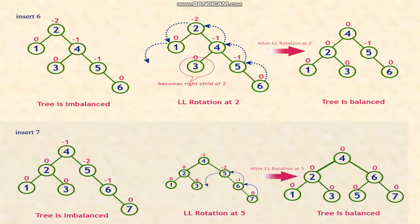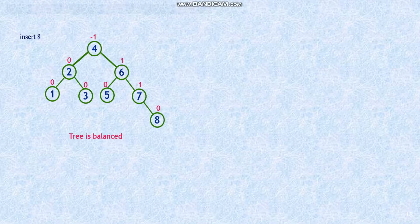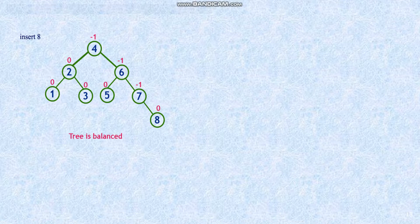While inserting 7, it becomes imbalanced again. The first encountered imbalanced node has a balance factor of -2. Count 3 nodes in the direction of the leaf: 5, 6, and 7 — right-right case, so we perform a left rotation. 5 becomes the left subtree of 6, and 6 becomes the right subtree of 4. Now the tree is balanced because the balance factor of each node is 0. Then 8 is inserted; since 8 is greater than 7, it becomes the right subtree of 7. Finally the tree is balanced. This is how insertion occurs in an AVL tree.